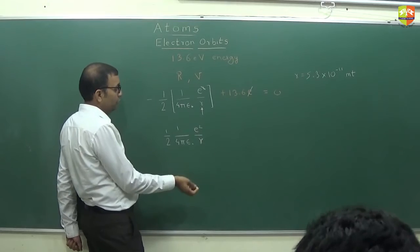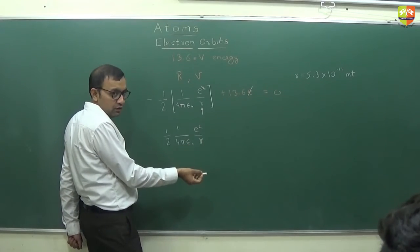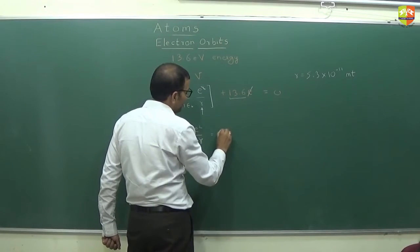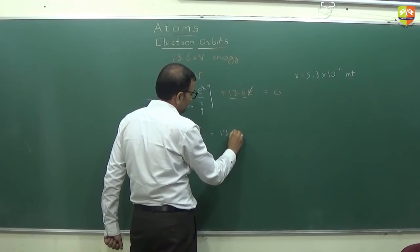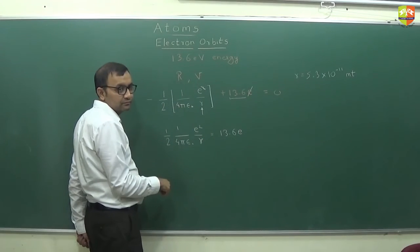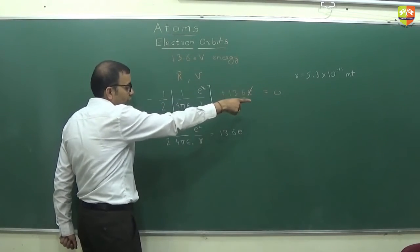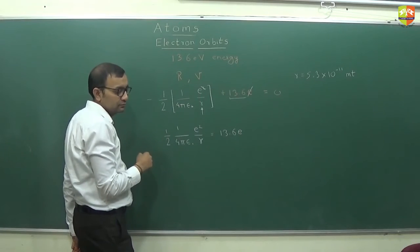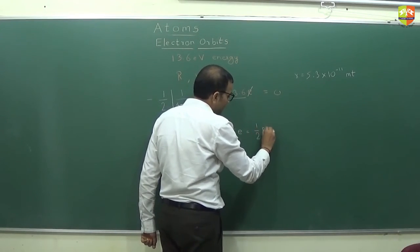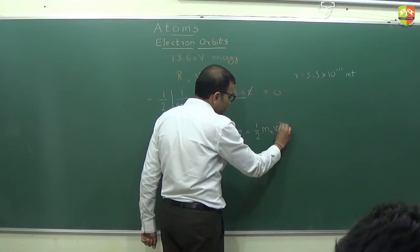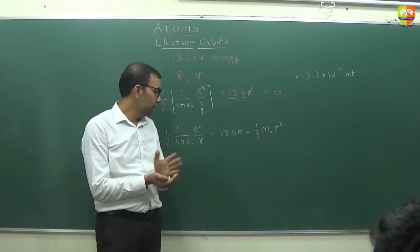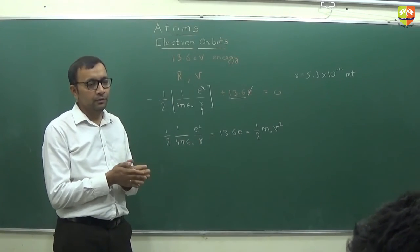Once you have R, you can find the velocity. Since kinetic energy = negative of total energy = 13.6 eV = ½mv², and the mass of the electron is 9.1 × 10⁻³¹ kg, substituting these values gives you the velocity of the electron.